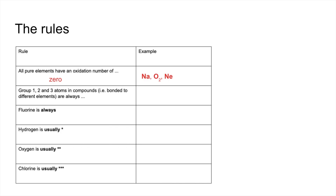Rule number two: if you have a Group 1, 2, or 3 element in a compound — in other words, bonded to something different — they are always plus one for Group 1, plus two for Group 2, and plus three for Group 3, with three examples given. Fluorine is always negative one, and there are three examples of compounds containing fluorine.